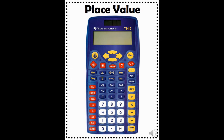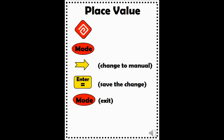Now we will examine the place value function. We will use the three buttons circled here in white: the problem solving key, the place value key, and the mode key. This function is a bit complicated to use. Begin by pressing the problem solving button, then press mode. Once the display changes to show auto and man, meaning automatic and manual, press the right arrow to change the calculator to manual. Press enter to save this change and press mode again to exit. You should now see a little problem solving icon at the top left of your calculator's display.